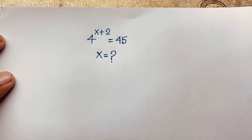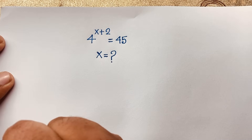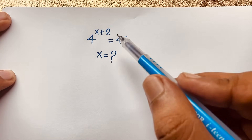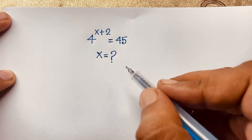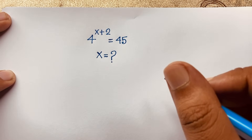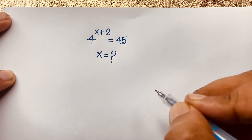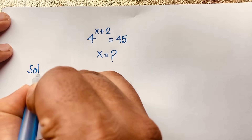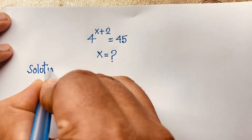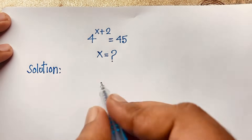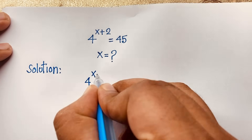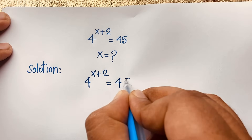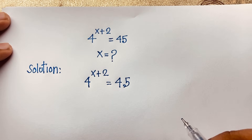Hello everyone, welcome to Russell's classroom. Today we have solved a nice junior Math Olympiad question. This question is: 4 to the power x plus 2 is equal to 45. I will solve this question step by step.